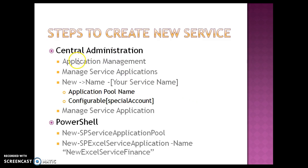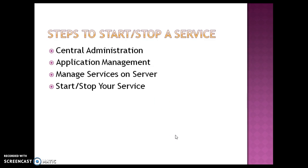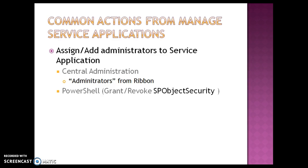So we saw how to create a new service application from central administration and also using PowerShell for an Access Service Application. We also saw how to start or stop a service from central administration. Some of the common actions include delegating administrative rights to new administrators, which you can do through central administration using the Administrators link, or you can use the PowerShell Grant-SPObjectSecurity or Revoke-SPObjectSecurity commands. Thank you.